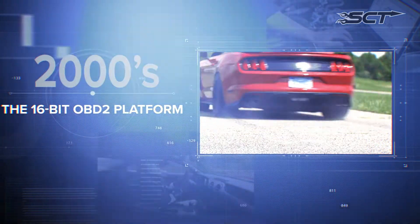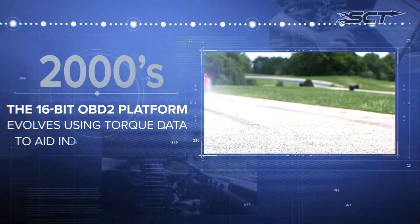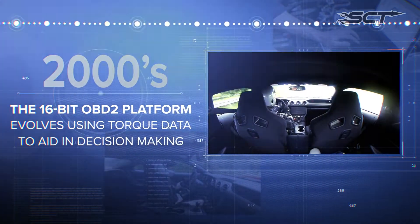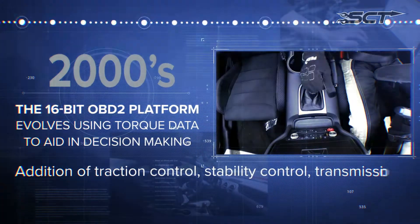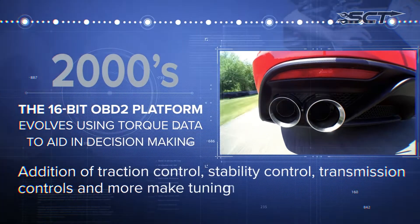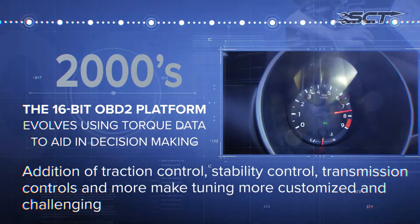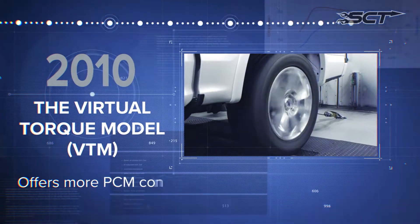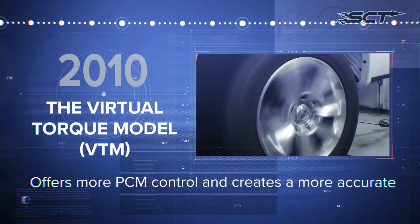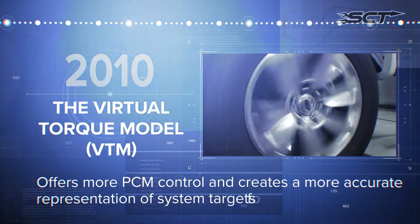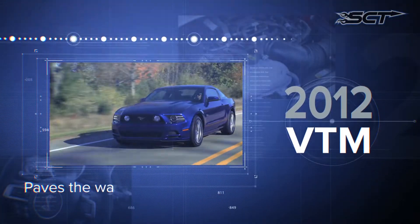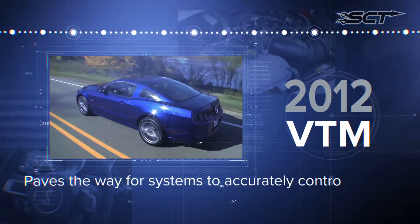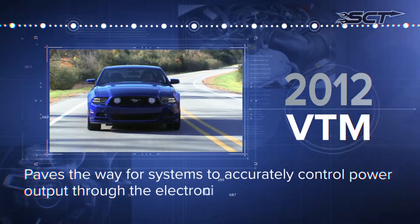The 16-bit OBD2 platform evolves, using torque data to aid in decision making. Addition of traction control, stability control, transmission controls, and more make tuning more customized and challenging. The virtual torque model offers more PCM control and creates a more accurate representation of system targets for torque, paving the way for systems to accurately control power output.